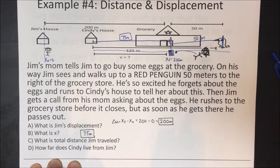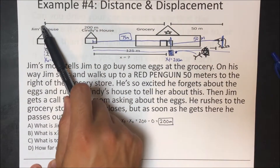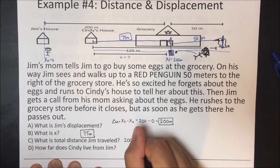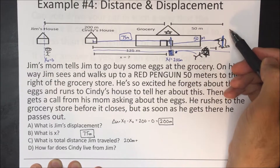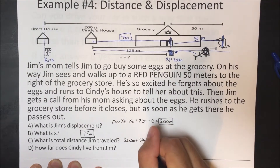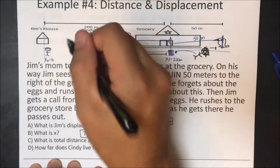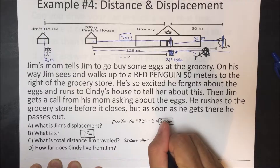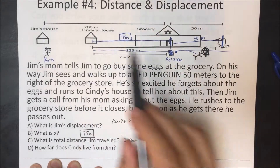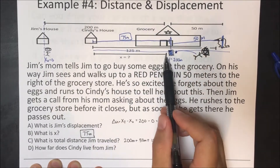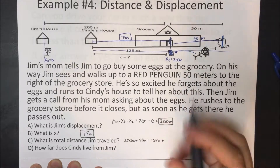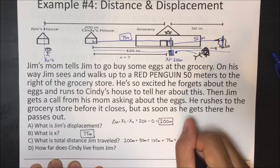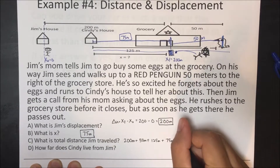What is the total distance Jim traveled? He goes to the grocery store — 200 meters — then to the red penguin — 50 meters — then to Cindy's house — 125 meters — then back to the grocery store — 75 meters. Add it all up and we get 450 meters.